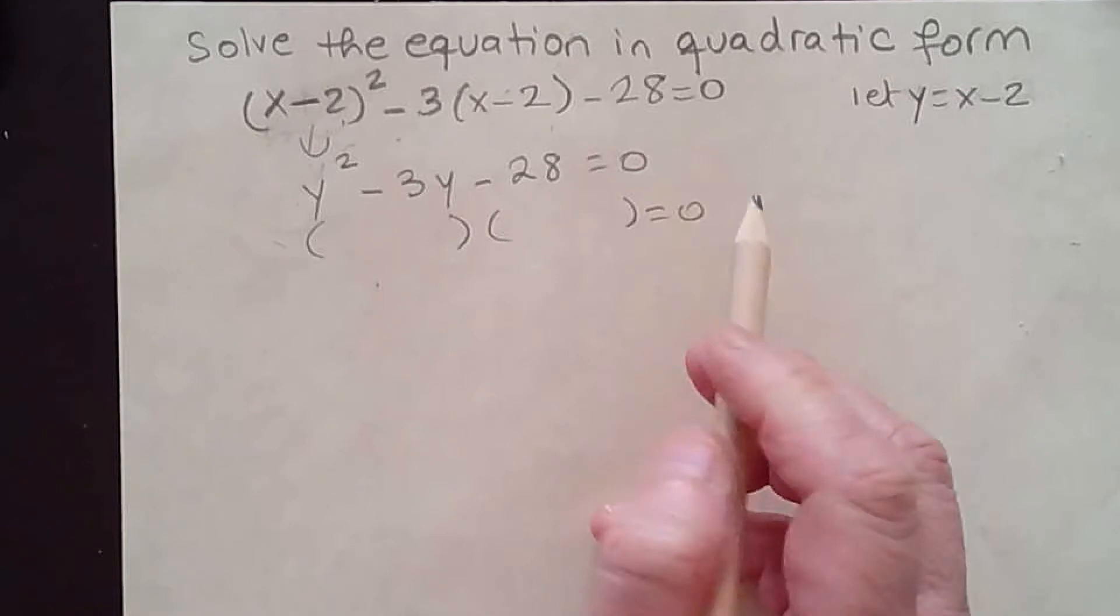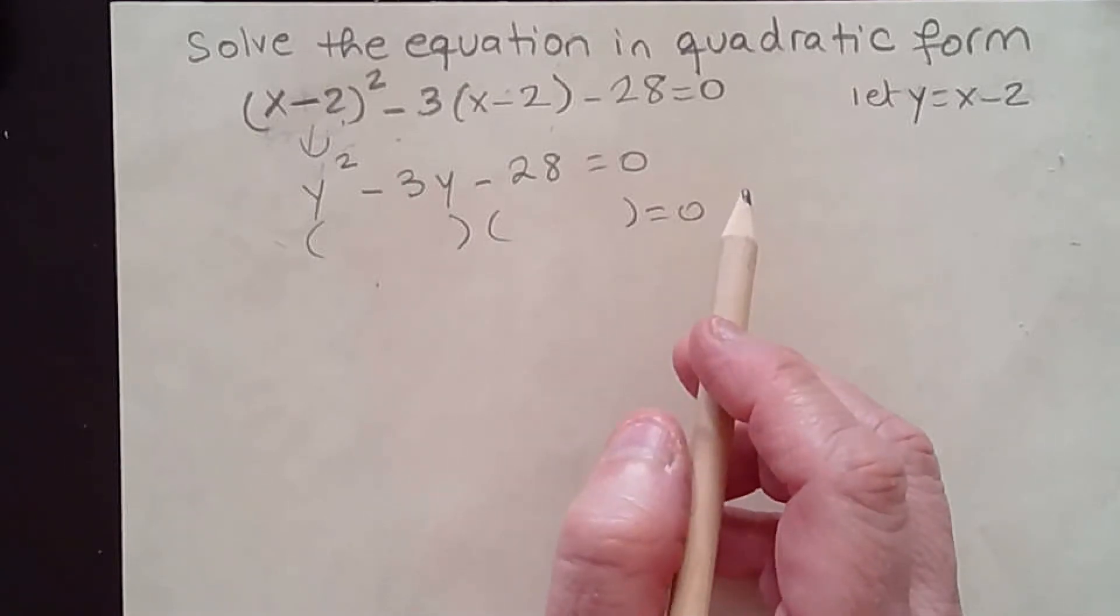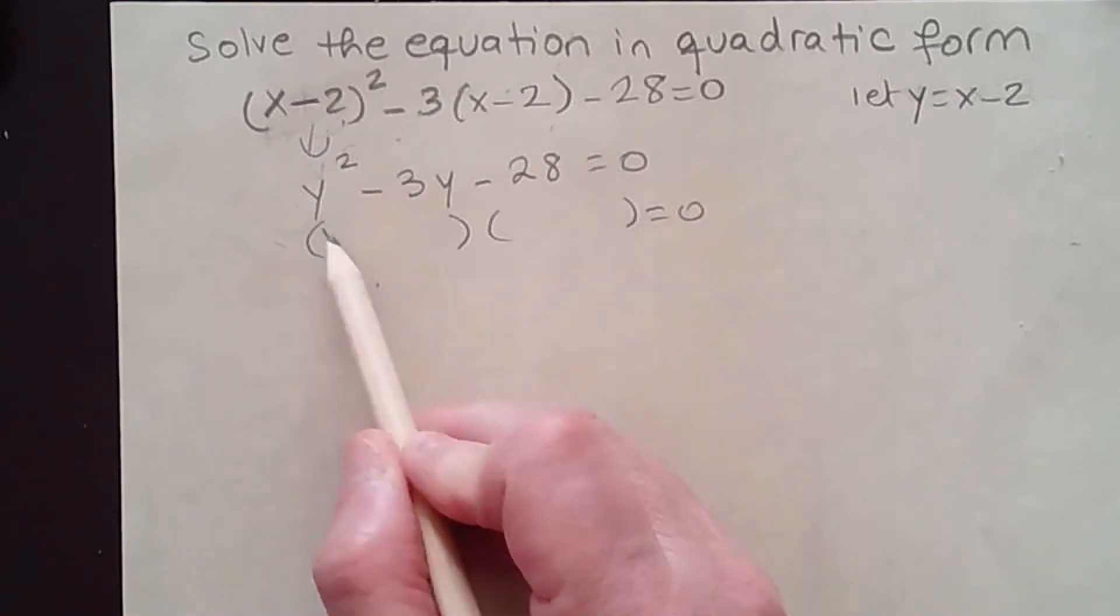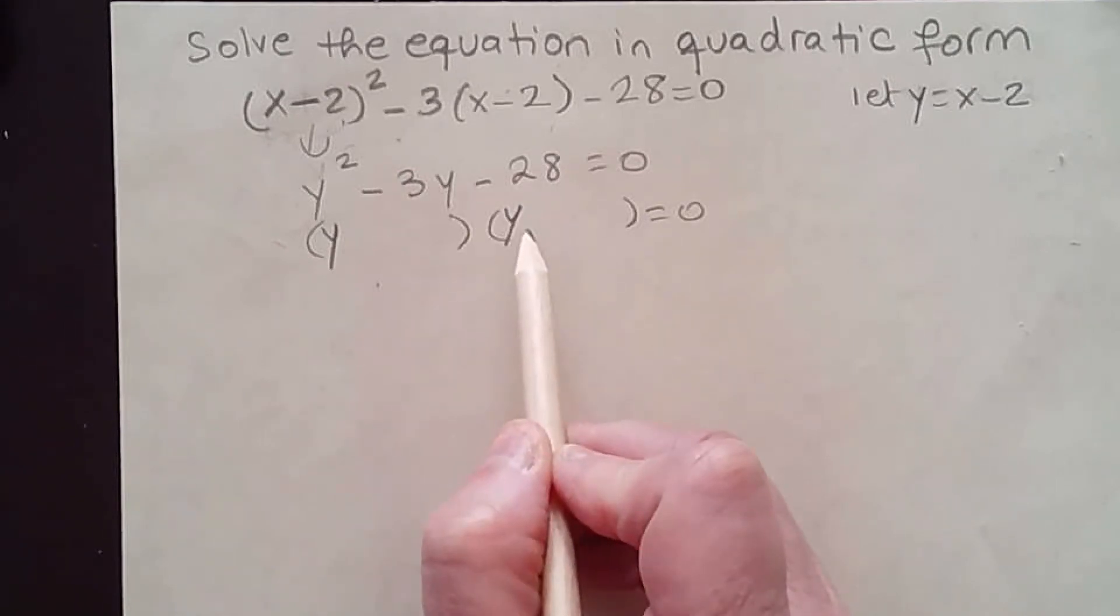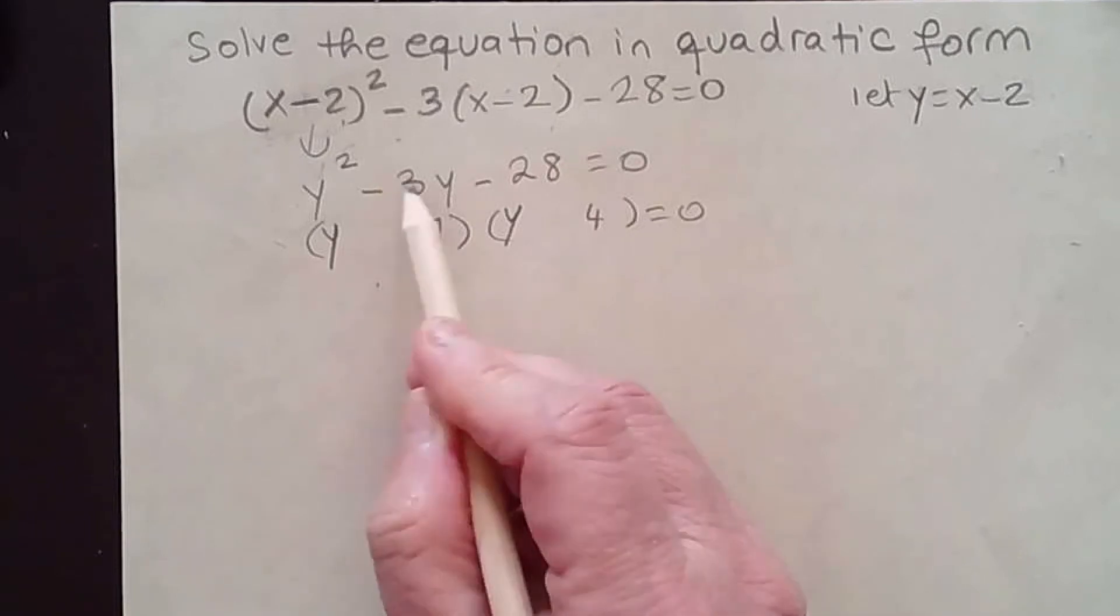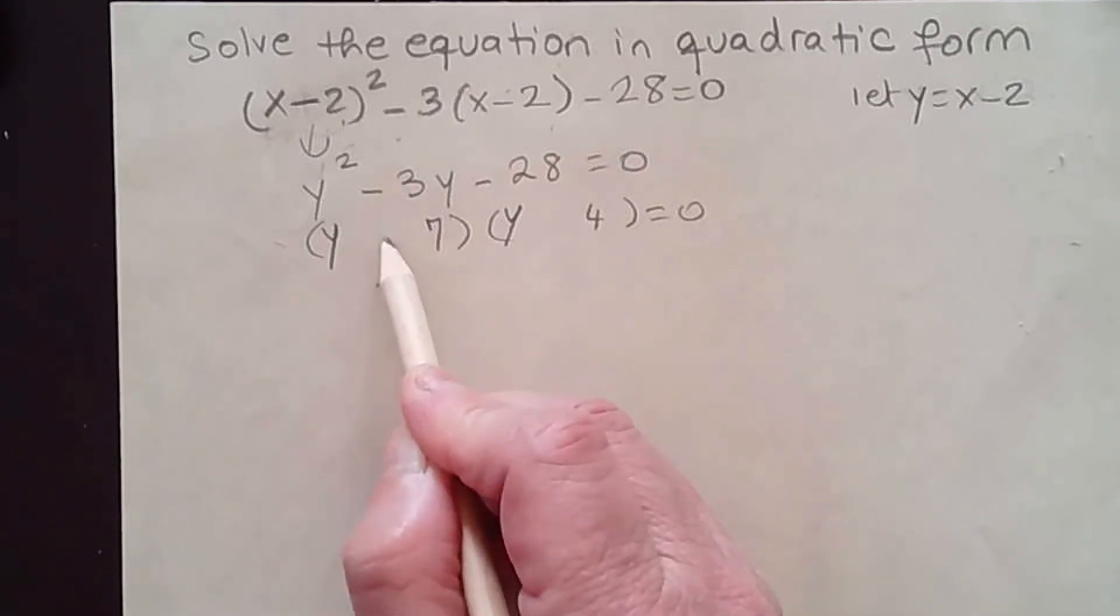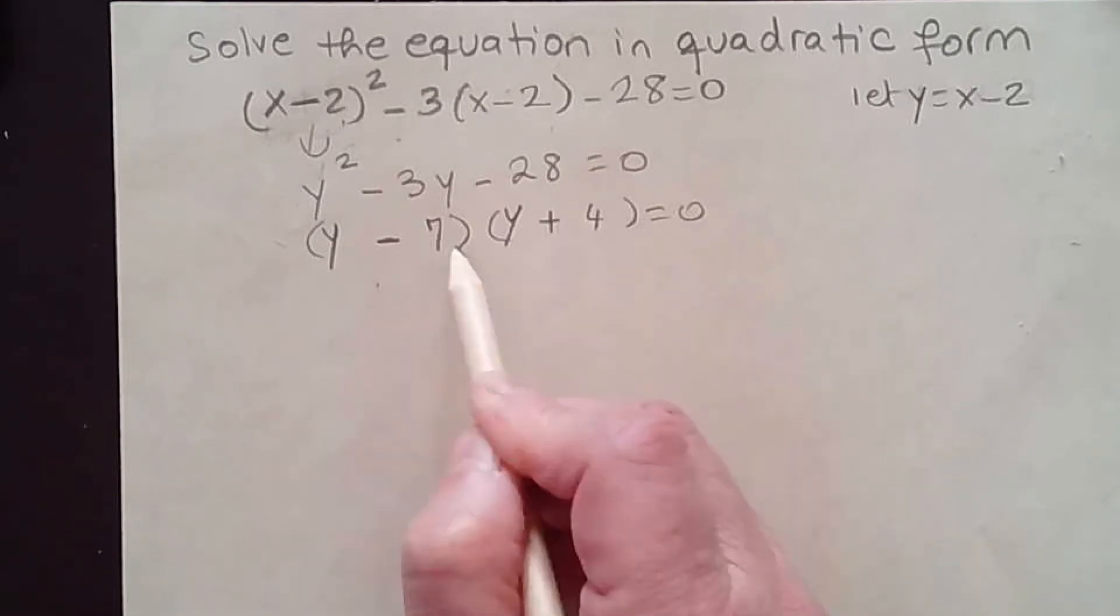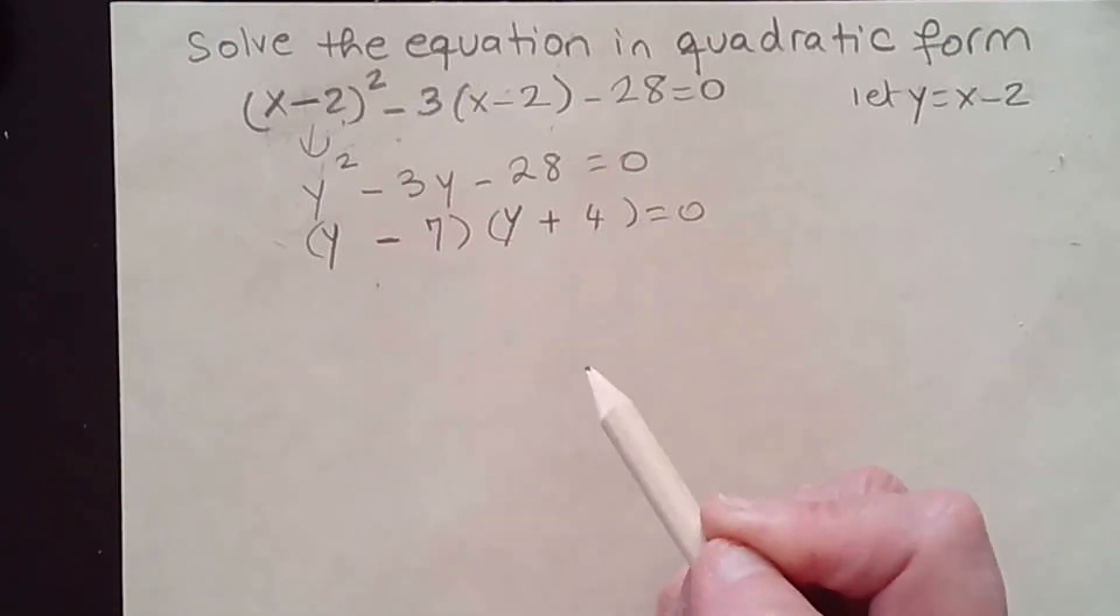As you can see you have y² that's y and y. 28 that's 7 and 4 and the difference is negative 3 so negative 7. 7 is a negative here. The larger absolute value must be negative because I have a negative in the middle term.